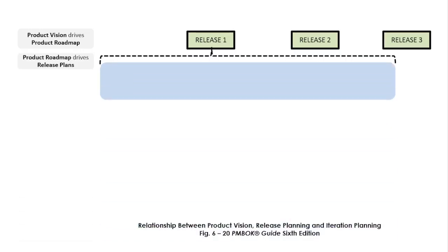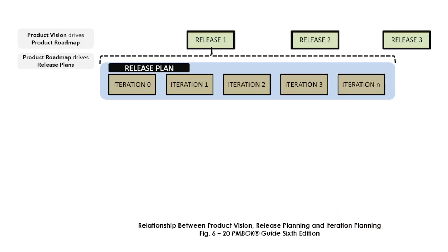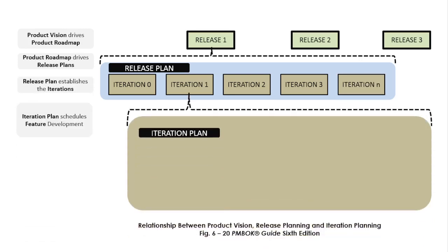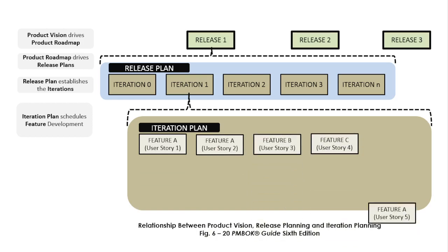It starts off with understanding the vision. From understanding the vision, you begin driving a product roadmap, which considers releases. Under the release level, we talk about the different iterations in each release. The release plan contains a higher-level plan of chunks of work that we'll be doing in iterations. Under the iteration level, we come to a concept known as a sprint plan or an iteration plan — this is where we decide which features we will complete at the end of each iteration.